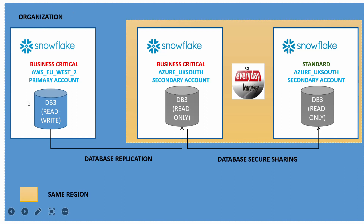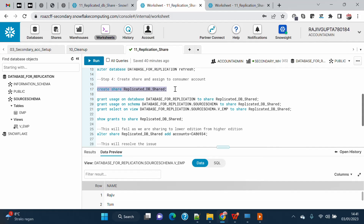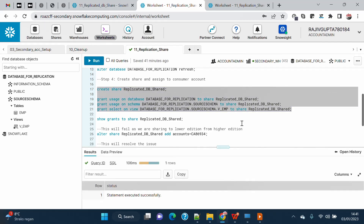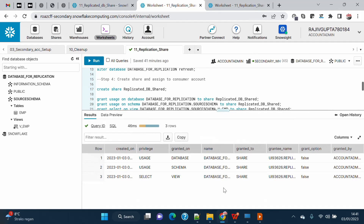Now we are done with this part where we set up the primary database, enabled the replication, came to the secondary account, created the replica, refreshed the database, and now this database has been replicated as a read-only copy. Next, we will create a share and share objects from this secondary account to the consumer account, then move to the Standard account and create a database from that shared database. Let's go back to the code and create a share called 'replicate_db_shared'.